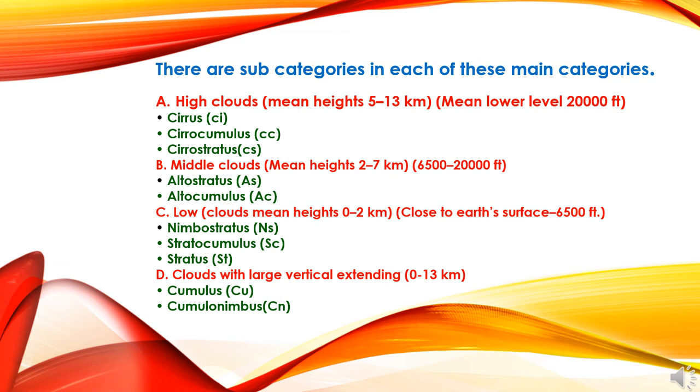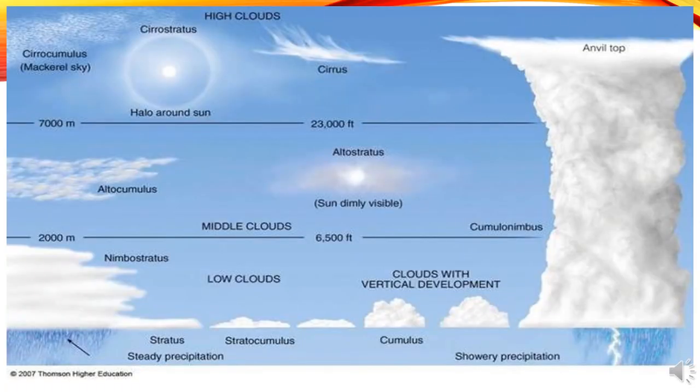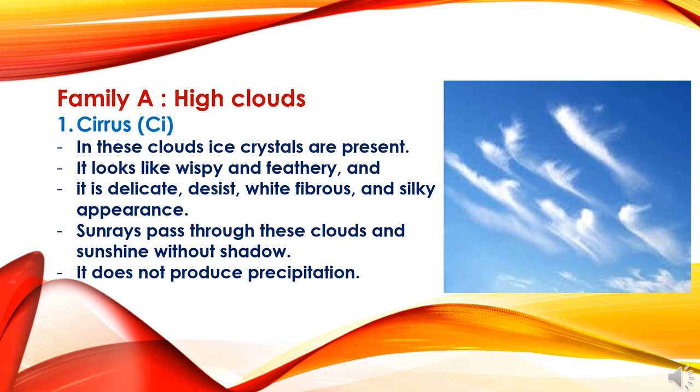Now we will discuss about each category in detail. This figure represents the different types of clouds based on their height: low clouds, middle clouds, and high clouds, with the different sub-categories mentioned. Now we will first discuss about Family A — high clouds.